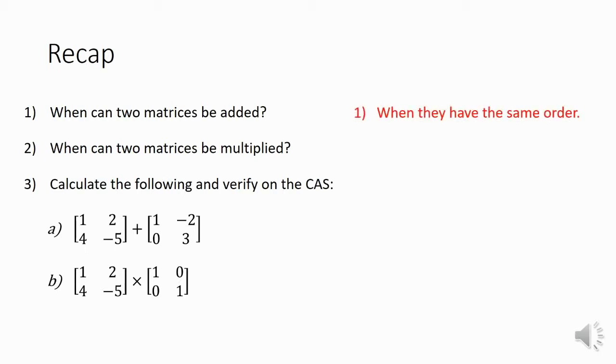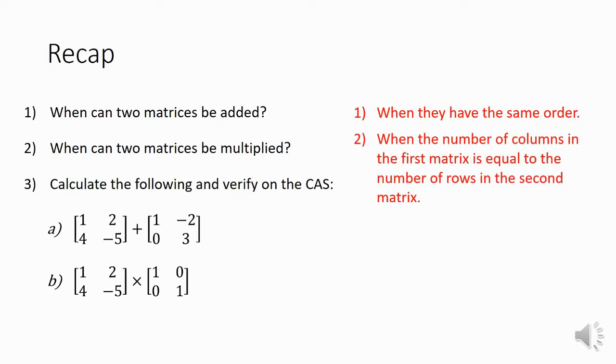For the first one, two matrices can be added when they have the exact same order, they're the exact same size so we can add corresponding elements. Two matrices can be multiplied when those middle numbers are the same, so the number of columns in the first matrix is equal to the number of rows in the second one.